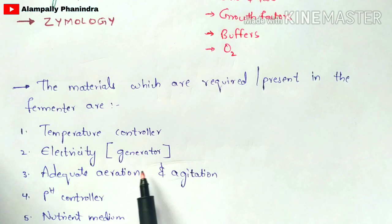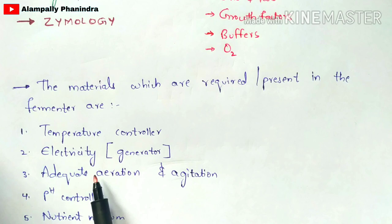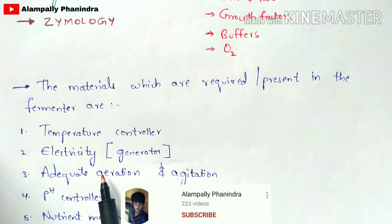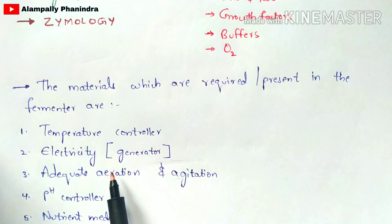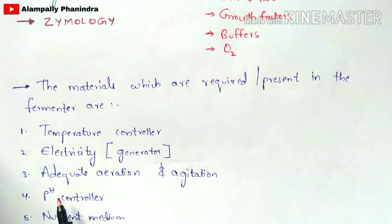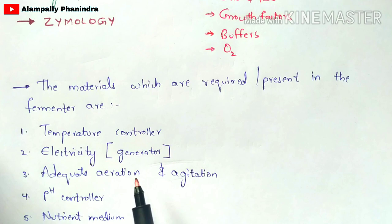Third is adequate aeration and agitation. Adequate aeration means a proper supply of oxygen to the fermentation tank so that primary metabolites can be converted into secondary metabolites. Without oxygen supply, the fermentation process does not occur. Oxygen is supplied through an inlet in the fermentation tank. Fourth is a pH controller — the pH can be controlled both externally and internally.